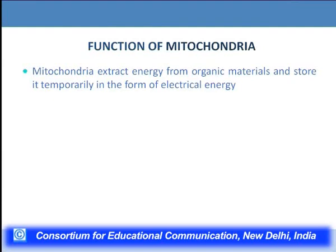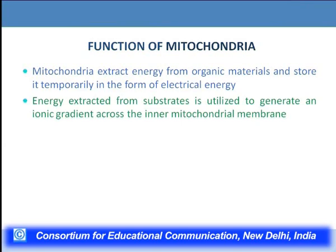Mitochondria is the organelle which extracts energy from organic nutrients and stores it temporarily as electrical energy. This electrical energy is later utilized to synthesize ATP — but not directly. The energy extracted from the substrate is used to create an ionic gradient across the inner mitochondrial membrane. Mitochondria has two membranes: the outer and inner mitochondrial membrane, separated by the intermembrane space. Specific electron carriers create this ionic gradient, which in turn leads to ATP synthesis.